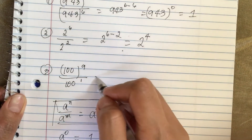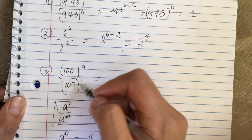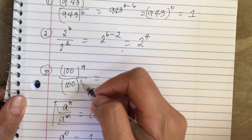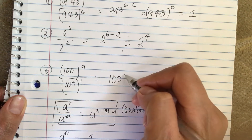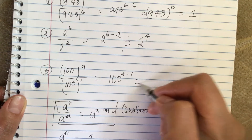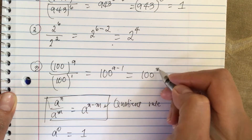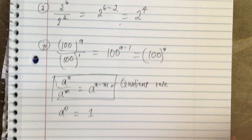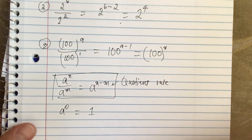Now the next one: we have 100 to the ninth power divided by 100 to the first power. This gives us 100 to the ninth minus one, so 100 to the 8. Now it gets a little tricky when the bottom exponent is negative.